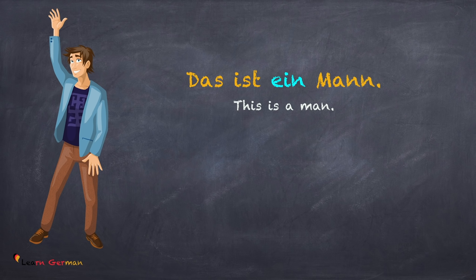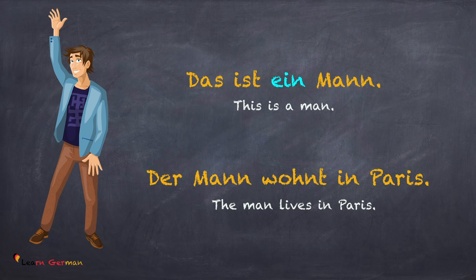Das ist ein Mann. Der Mann wohnt in Paris. The definite article, just as the name suggests, is talking about a particular person — the man. That's why these articles are definite. Whereas in the case of indefinite articles, just as the name suggests, we are not talking about a particular man, but just a man. That's why we use an unbestimmte article.